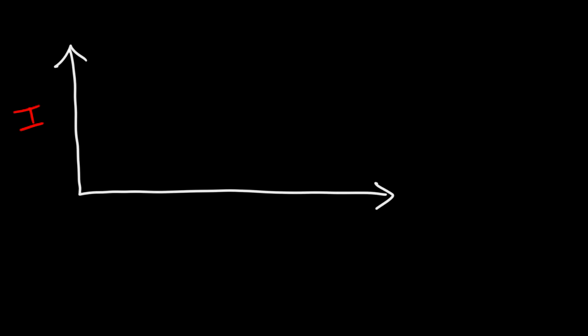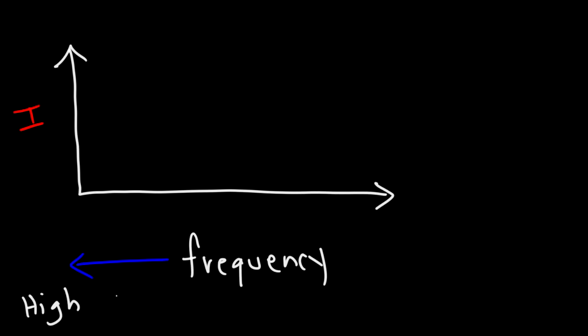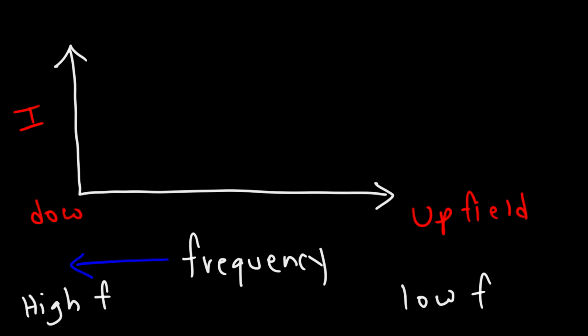Let's put that into practice. On an NMR spectrum, the y-axis shows intensity and the x-axis shows frequency. Note that frequency does not increase left to right — it actually increases toward the left, so watch out for that. On the left side we have high frequency, which is called downfield, and on the right side we have low frequency, which is called upfield.